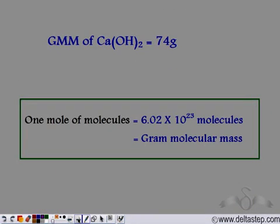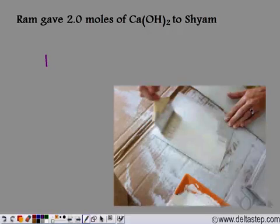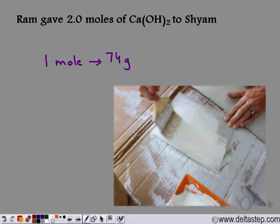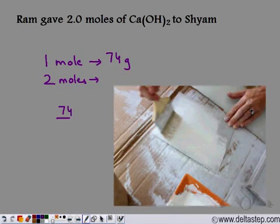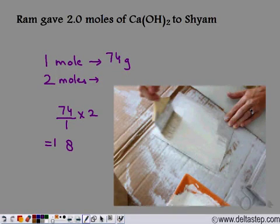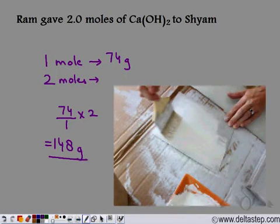Now let's recall: 1 mole of molecules contains 6.02 × 10²³ molecules and its mass is equal to the gram molecular mass. So 74 grams is the mass of 1 mole. Ram had given 2 moles of calcium hydroxide to Shyam. Using the unitary method, 2 moles weighs 74 ÷ 1 × 2 = 148 grams. So Ram had given 148 grams of calcium hydroxide to Shyam for whitewashing.